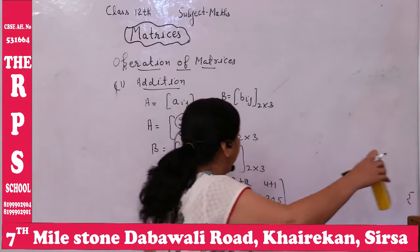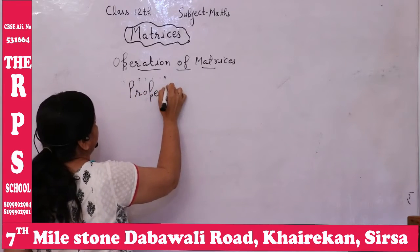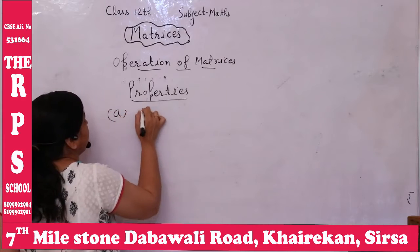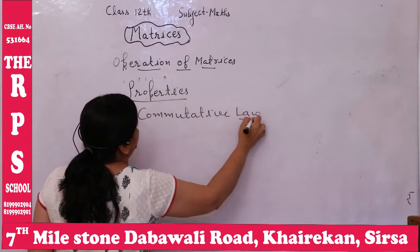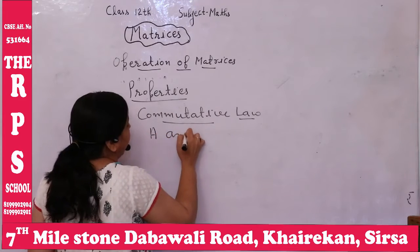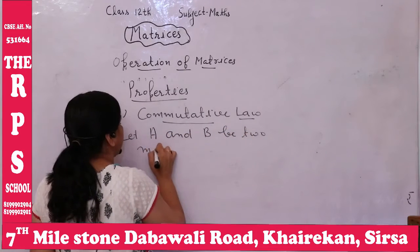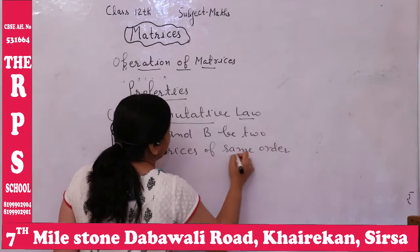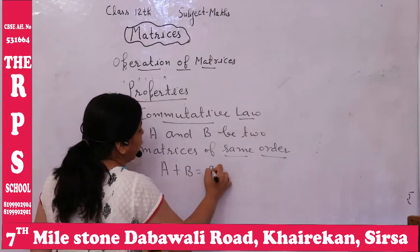Now, properties of addition. First is commutative law. In commutative law, if two matrices A and B are of the same order — same order is a must — then A plus B equals B plus A.